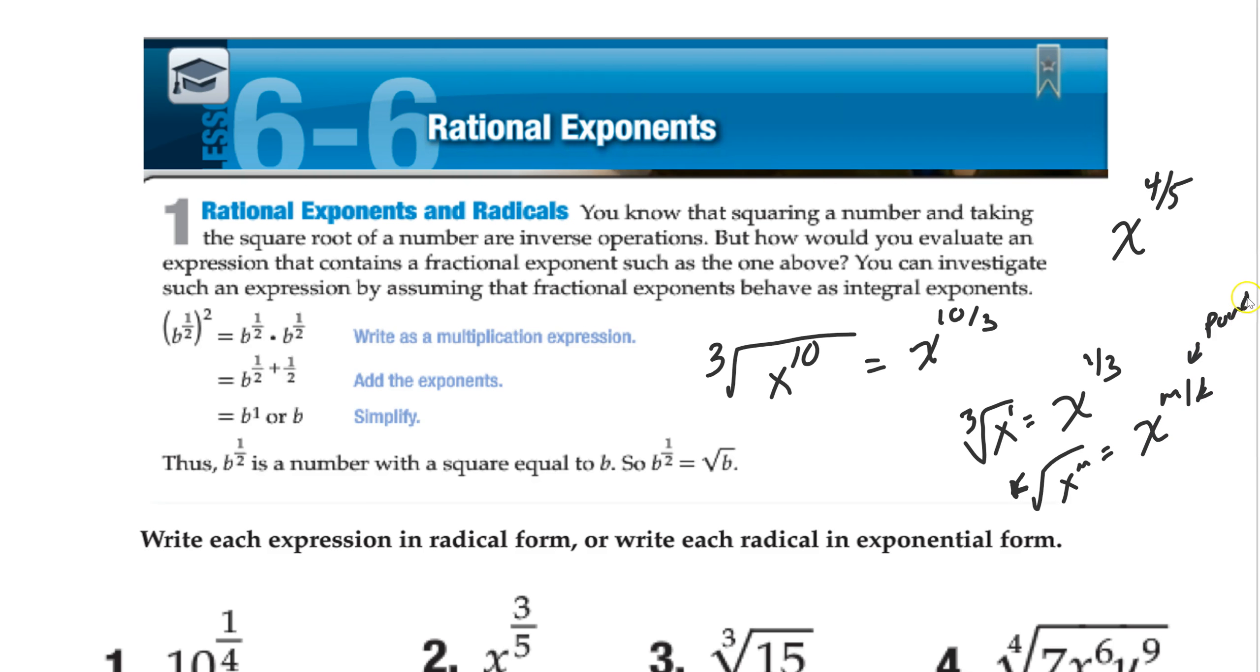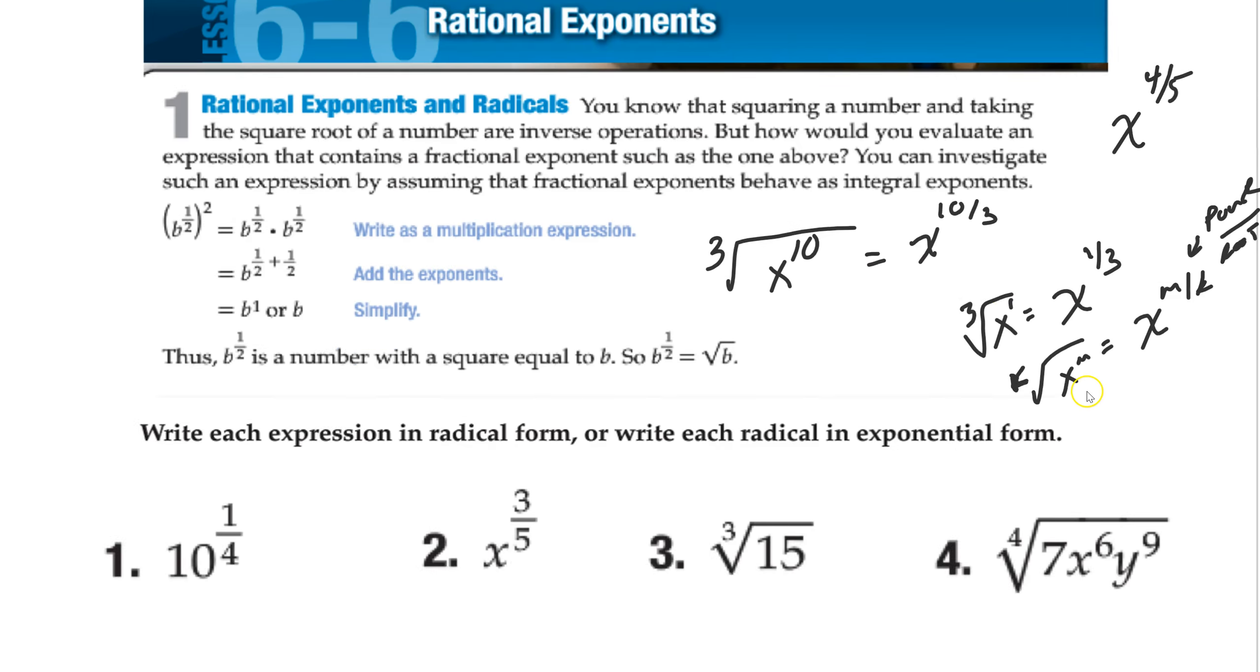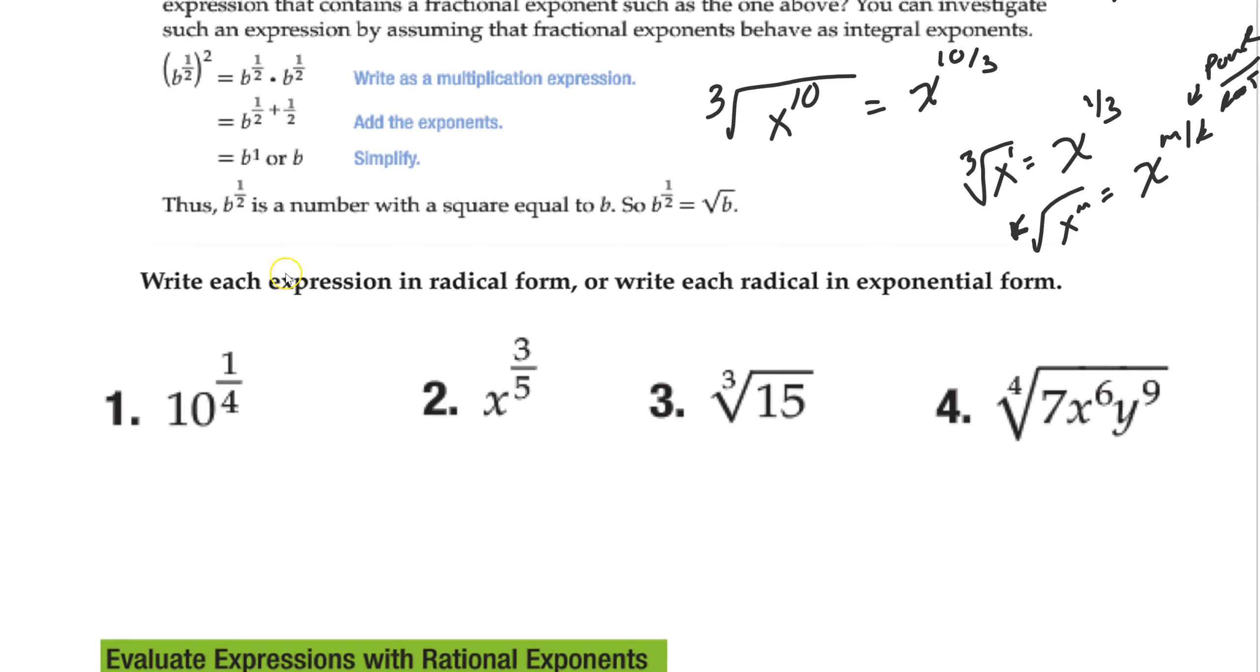Power over root, that's the key. Power over root. So that's the whole idea. That's how I rewrite it. So all I want you to do here is rewrite it. In this case, I want you to rewrite it. So 10 to the 1 fourth, remember this is the power, this is the root. So we're going to write it as the fourth root of 10 to the first, or just the fourth root of 10.